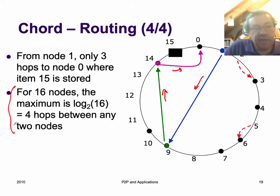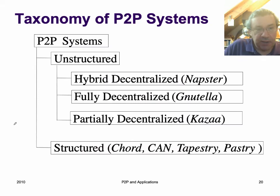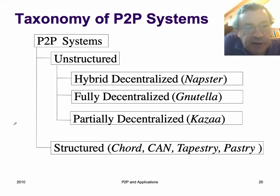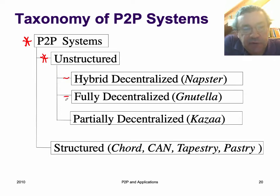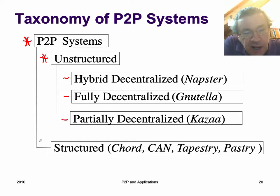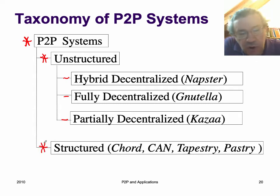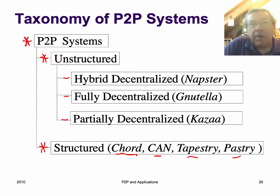That makes a 3-hop routing. From node 1, we do 3 hops and arrive at node 0, where item 15 is stored. For 16 nodes, the maximum number of hops is log base 2 of 16, which is 4. Looking at general peer-to-peer systems, we have unstructured ones like Napster and Gnutella — hybrid and fully decentralized — and variations like Kazaa. Now we're talking about the structured ones, the distributed hash tables. Chord is one example, but there are many others: CAN, Tapestry, and Pastry.